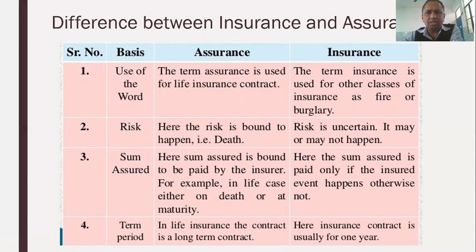In insurance, the risk is uncertain — it may or may not happen. In assurance, the sum assured is bound to be paid by the insurer. For example, in a life insurance case, whether death occurs or the policy matures, the sum assured is paid.